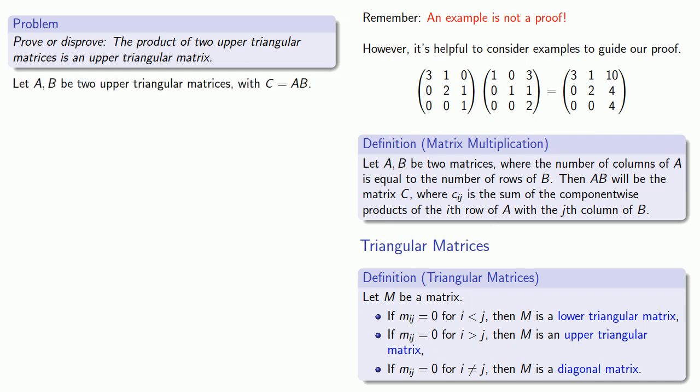So suppose A and B are two upper triangular matrices with C the product of A times B. So the entry in the i-th row j-th column of our product matrix is going to be the sum of the component-wise products of the i-th row of A with the j-th column of B. And so the entries in the i-th row of A are going to be Ai1, Ai2, and so on. And the entries in the j-th column of B are going to be B1j, B2j, and so on. We'll multiply them and add them together to get our entry in the ij-th position of the matrix C.